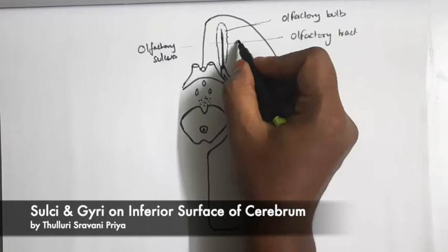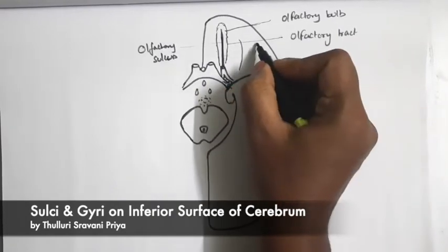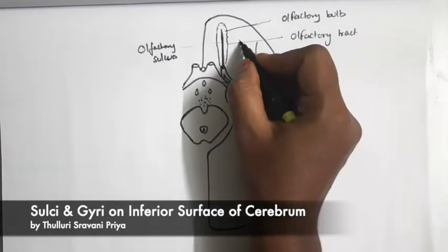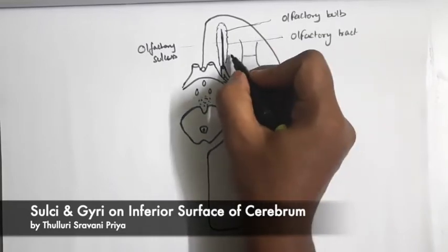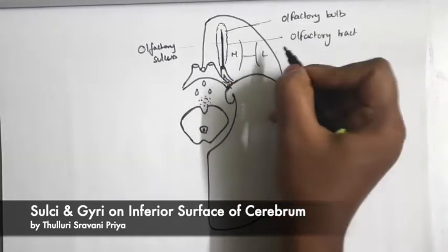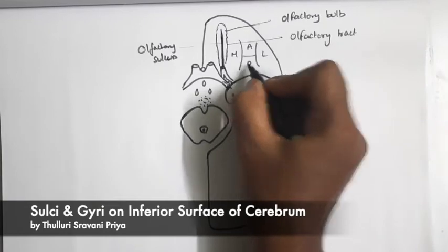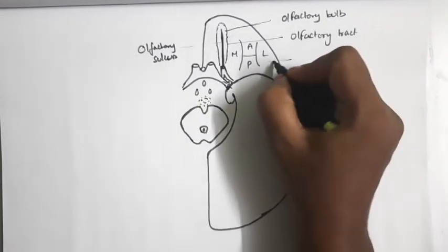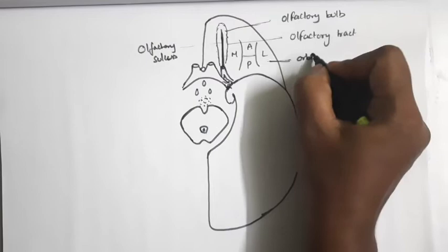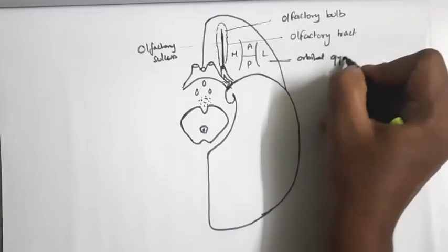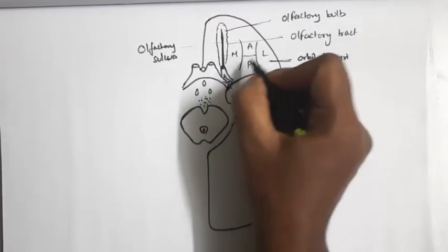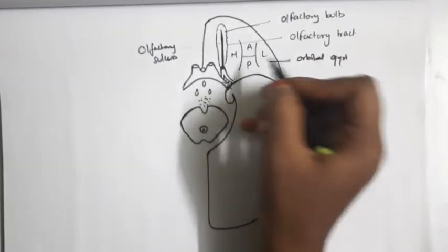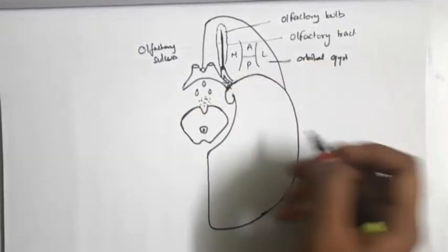There is another irregular H-shaped sulcus known as the orbital sulcus, which divides the area into medial, lateral, anterior, and posterior orbital gyri. All these are the orbital gyri — anterior orbital, posterior orbital, medial and lateral orbital gyri. And this is the H-shaped orbital sulcus.